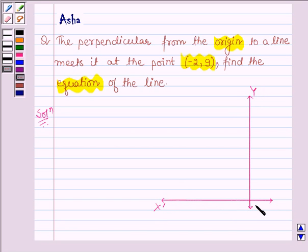This point denotes O having coordinates (0, 0). Now let this point denote (-2, 9).